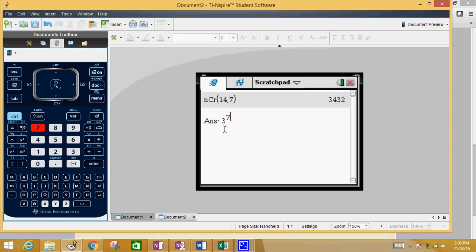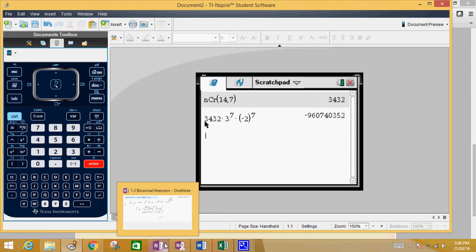And then we're going to times it by negative 2, so I'll put that in bracket, negative 2 to the power of, I believe this was 7 as well. Okay, enter, and we get some really big number, negative 960,740,352.